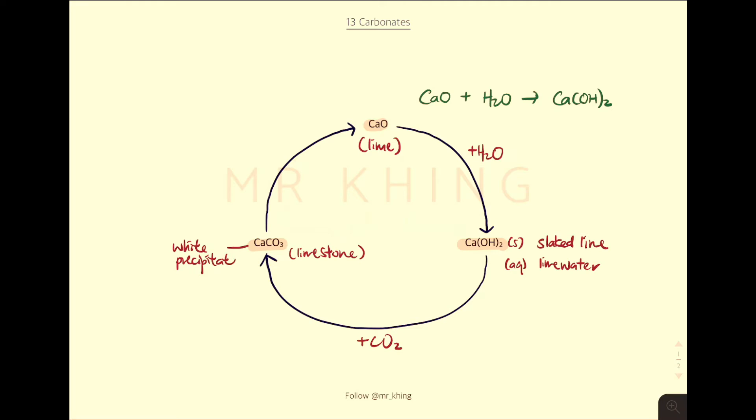So this is the reason why when you bubbles carbon dioxide gas into lime water, it turns cloudy. So this is the reason why it turns cloudy. It's because of the formation of this white precipitate, so-called calcium carbonate. Followed by this chemical equation.